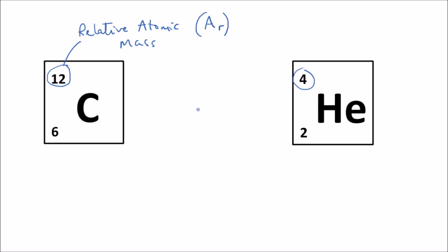So here are two examples. Here's carbon 12 and helium 4. This means that one carbon atom is three times heavier than a helium atom. The relative atomic mass, the Ar of carbon, is 12 and the Ar of helium is 4.